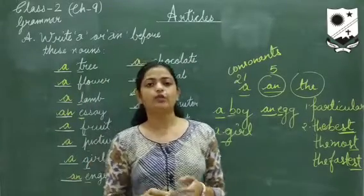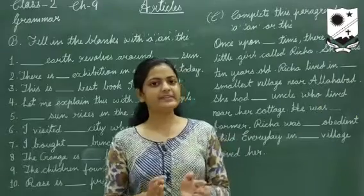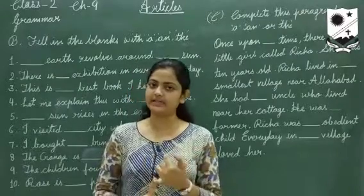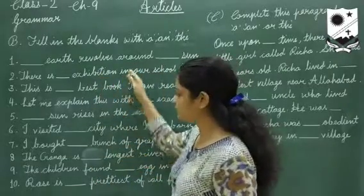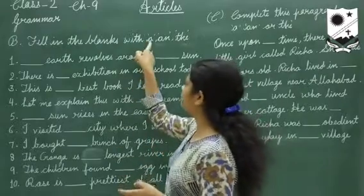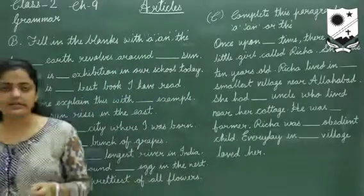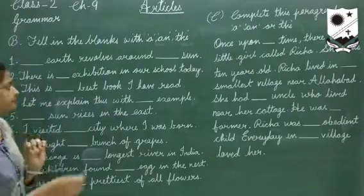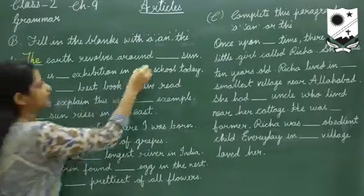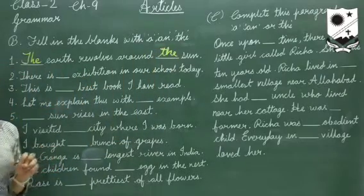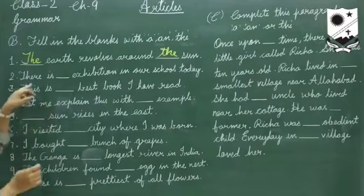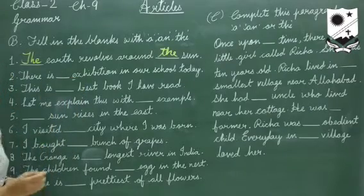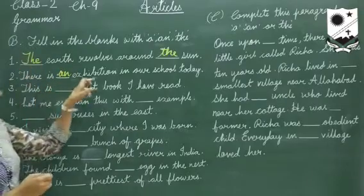Now let us discuss exercise B and exercise C of the chapter Articles. We have to fill in the articles in all the blanks. Number one: 'Dash earth revolves around dash sun.' With names of heavenly bodies we use 'the', so: 'The earth revolves around the sun.' Number two: 'There is dash exhibition in our school today.' Exhibition starts with a vowel, so we use 'an': 'There is an exhibition in our school today.'